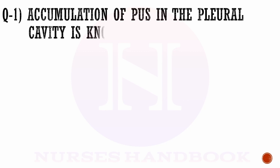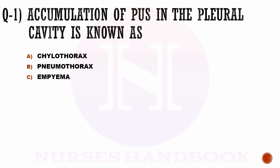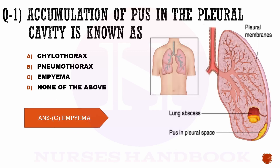Question number 1. Accumulation of pus in the pleural cavity is known as: options are a) chylothorax, b) pneumothorax, c) empyema, and d) none of the above. The correct answer is option c, empyema.